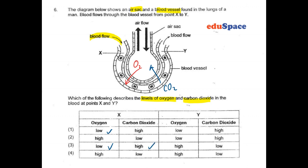At Y, the blood would have gotten lots of oxygen flowing away from the air sac. So the amount of oxygen should be high. So answer number 3.